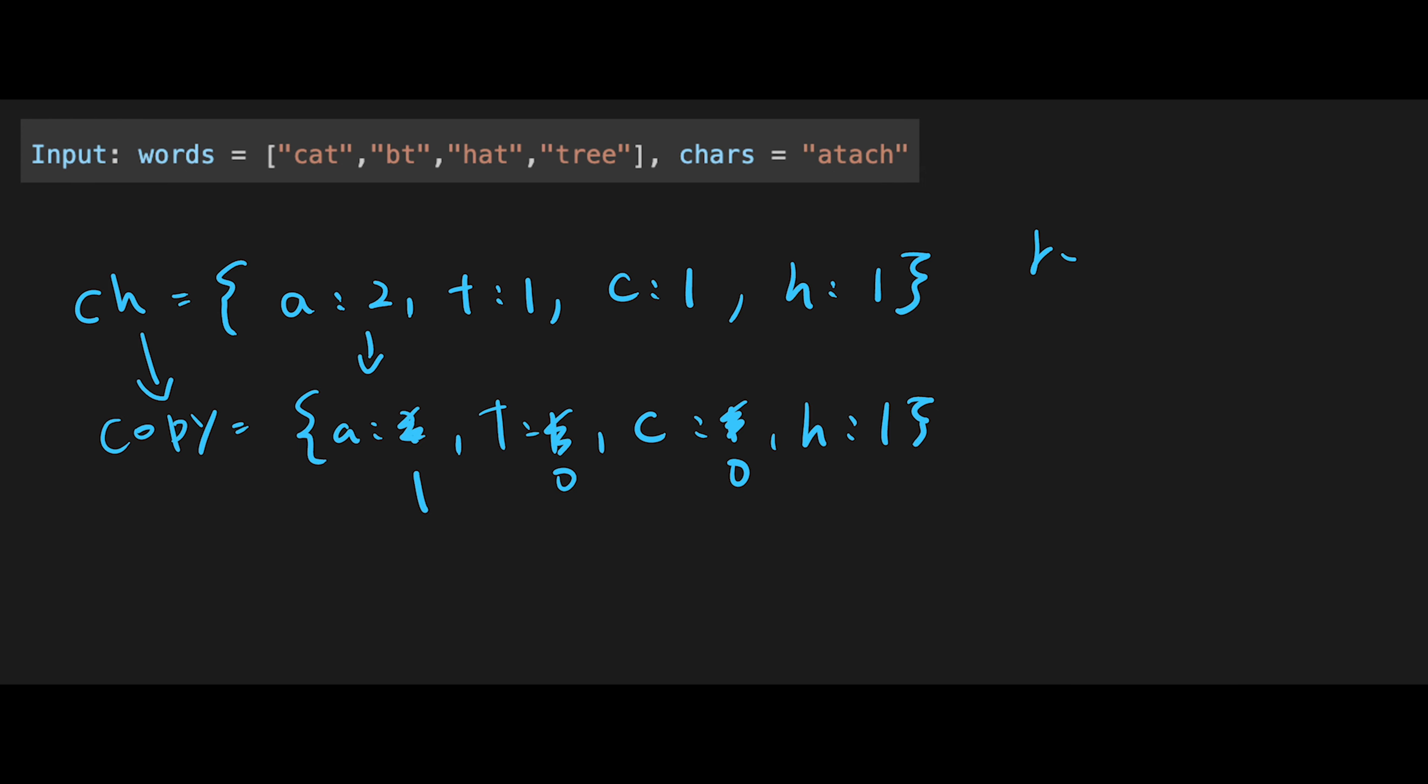So that's why result should be length of cat, which is 3. Then move next. As I told you, we copy this ch to this copy variable. So now again, like 2, 1, 1, 1. And then find bt. But there is no b, right? In that case, we don't do anything.